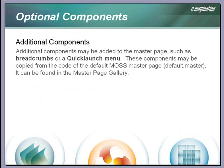You may wish to use additional components that are not currently available in the base master page. Two components that we use often are the quick launch menu and the breadcrumbs control. You can find the code for the quick launch menu in the default.master file in the master page gallery in SharePoint Designer. The breadcrumb control does exist in the base master page — it has just been hidden with other elements near the bottom of the code.